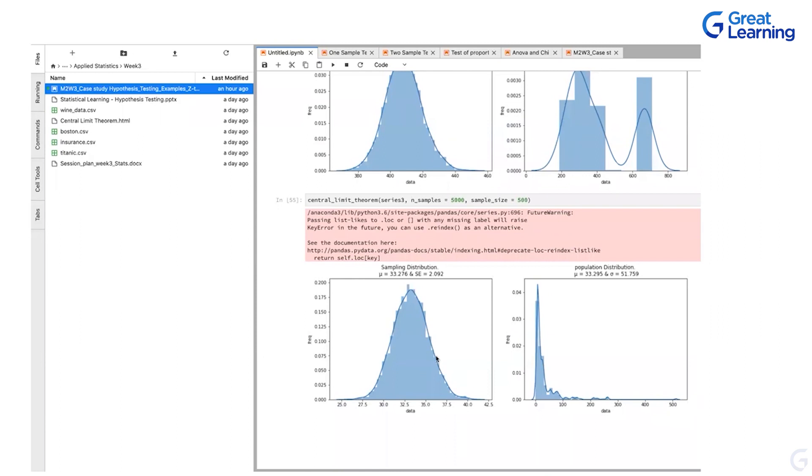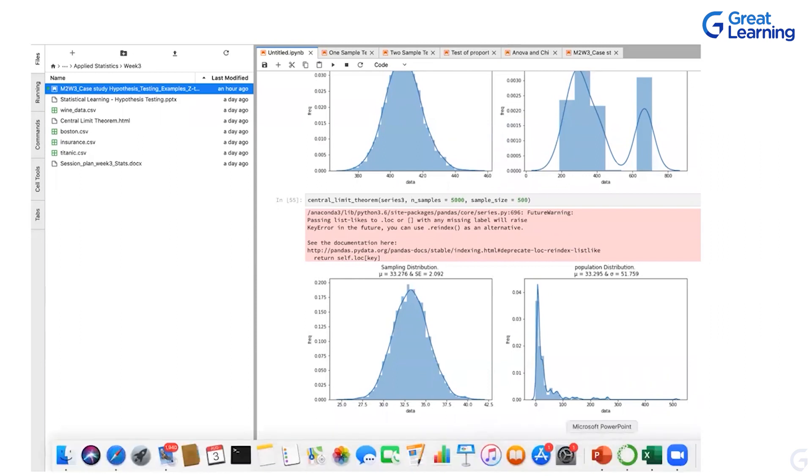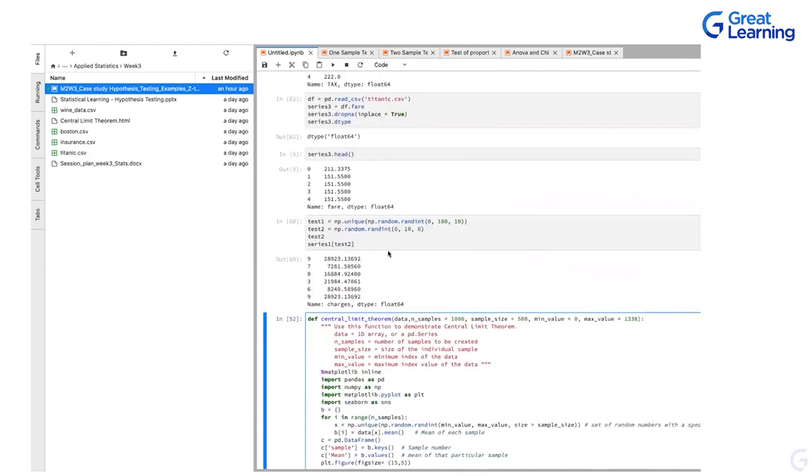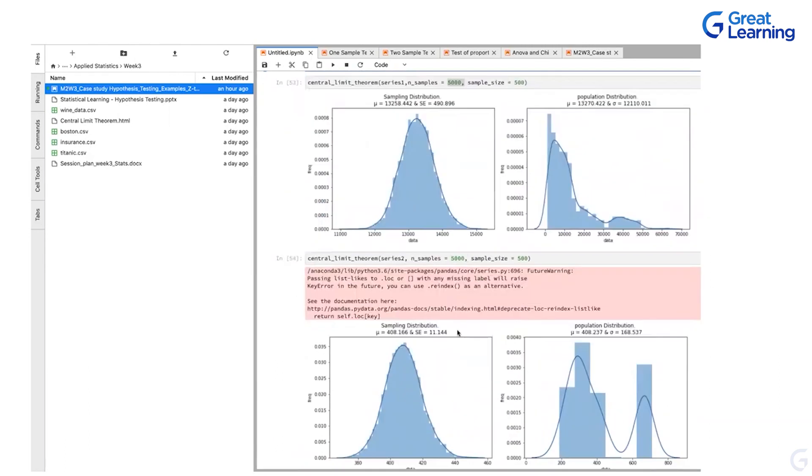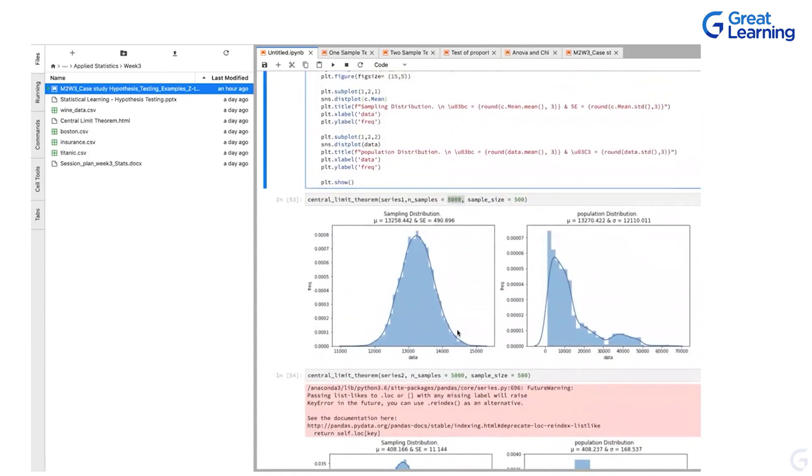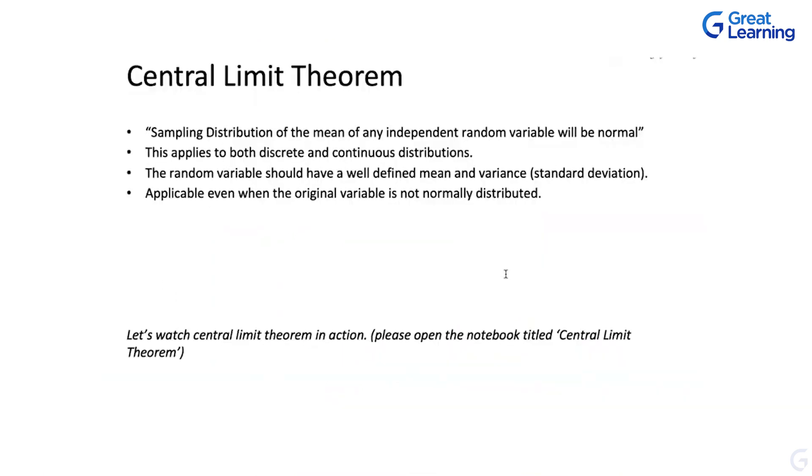So that's primarily is the central limit theorem. First, I would suggest go back, watch the video again, practice this file, change your own values. Like I created this test values, how the NP random works and everything here also make your own changes, start looking at the thing, then you will start absorbing what actually this code is all about, what it is telling. And then read a little bit about central limit theorem. You'll understand the things far, far better. So that's primarily about sampling distributions and central limit theorem.